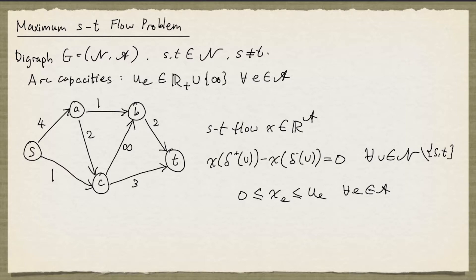In plain English, we're adding up all the flow values on arcs that have v as tail, and we subtract the sum of the flow values on arcs that have v as head. So this is saying the total flow out of a node minus the total flow into a node has to be 0.